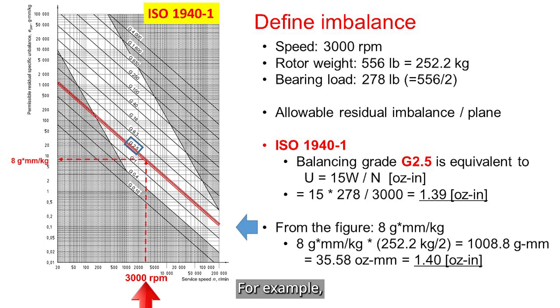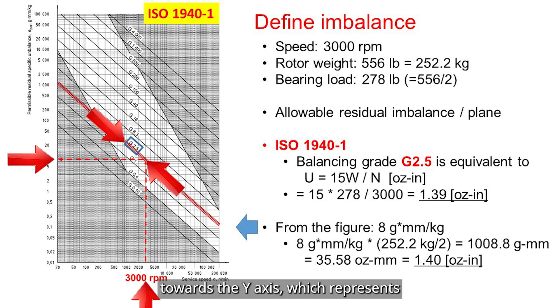Or you can use the ISO chart to draw a line and find the allowable imbalance. For example, if the defined speed is 3000 rpm, locate 3000 rpm on the x-axis, the speed, and draw a vertical line upward until it intersects the G2.5 line. From that point, draw a horizontal line towards the y-axis, which represents the residual specific imbalance.